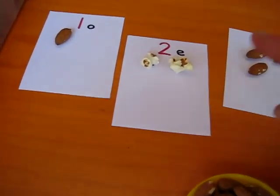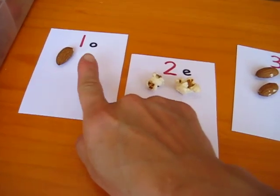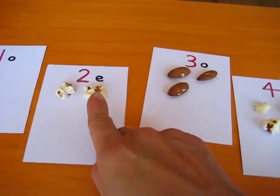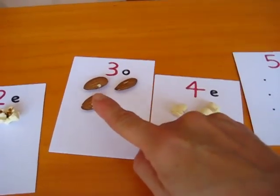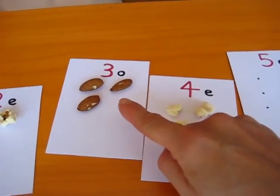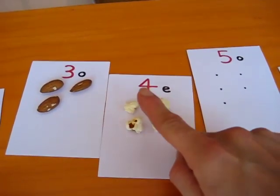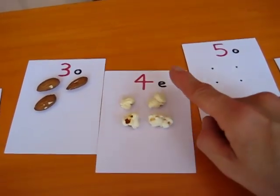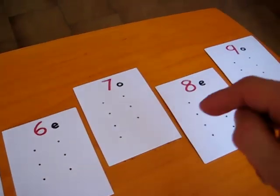Then we go on to explain: Look, one is odd, it has no partner. Two is even because it has a partner. They're even. Three, this one has a partner, but this one has no partner. It's an odd number. Four, this has a partner and this one has a partner. That must be even. And on and on you go explaining odd and even.